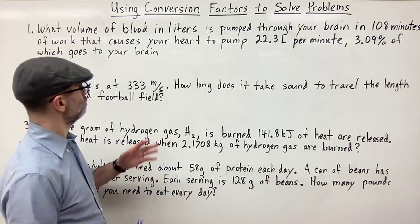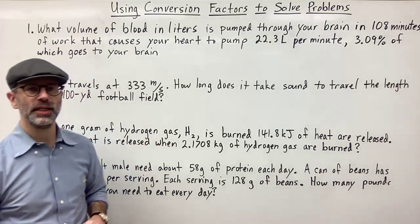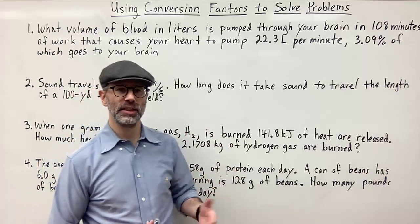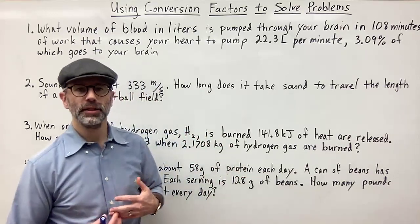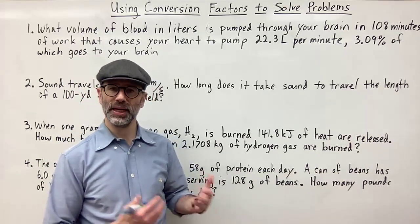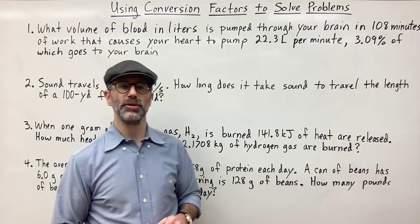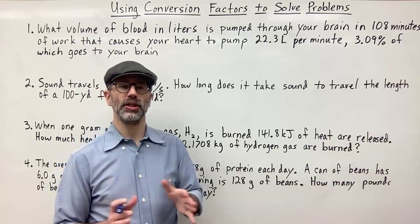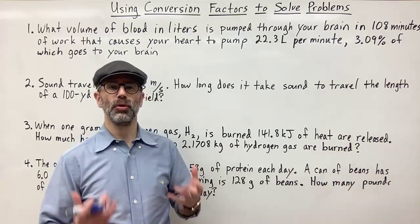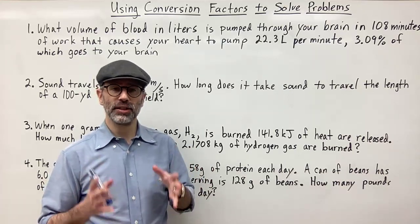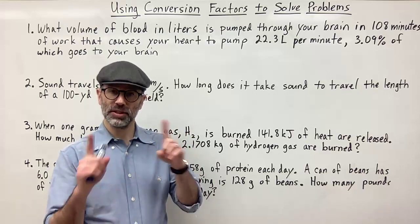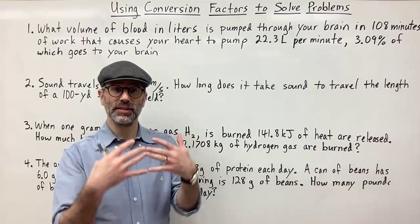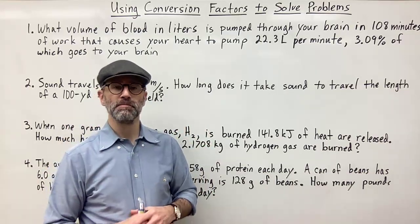So first problem: we're asked what volume of blood in liters is pumped through your brain in 108 minutes of work that causes your heart to pump 22.3 liters per minute, with 3.09 percent of which goes to the brain. Whenever you're attacking these sorts of problems, the first thing you want to do is pull out the information and pull out the conversion factors. The conversion factors are the information that's related to each other — pieces of information with a relationship of something per something, or they connect two things together. You can use that as a conversion factor.